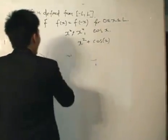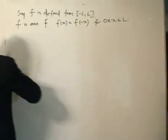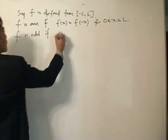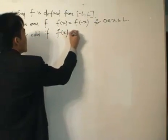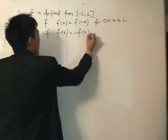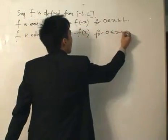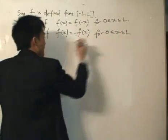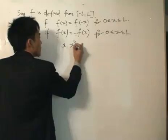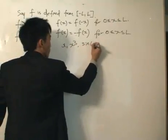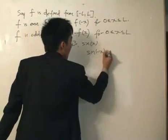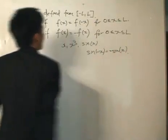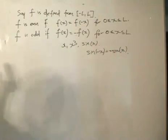Now, what if f is odd? f is odd if f(minus x) equals minus f(x) for 0 to L. Notice the difference — the minus sign is now outside. Common examples would be x, x cubed, and the sine x function, using the identity that sine(minus x) equals minus sine x.